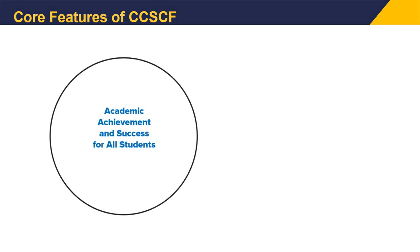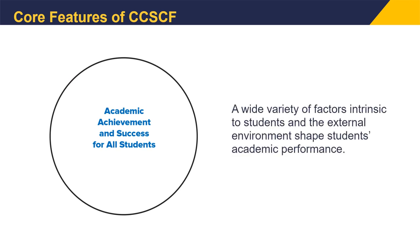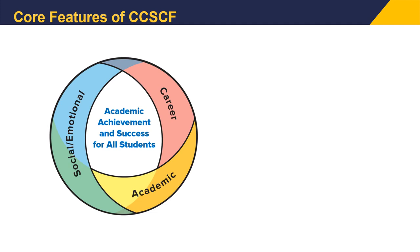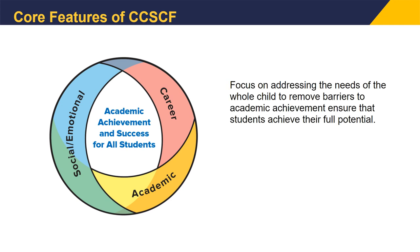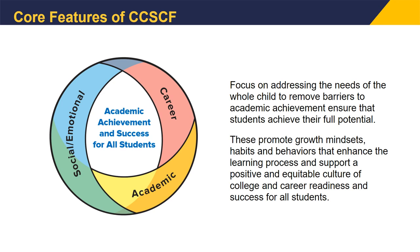The center of our work is always the academic achievement and success for all students. However, students' content knowledge and academic and career skills are only part of the equation for student success. A wide variety of factors intrinsic to students and the external environment shape students' academic performance. Coupled with mastery of academic skills and social, emotional and wellness proficiency, this will prepare students to be positive architects of their lives with their mindsets and behaviors. The focus is to address the needs of the whole child, remove barriers to academic achievement, and ensure students achieve their full potential. These promote growth mindsets, habits and behaviors that enhance the learning process and support a positive and equitable culture of college and career readiness and success for all students.